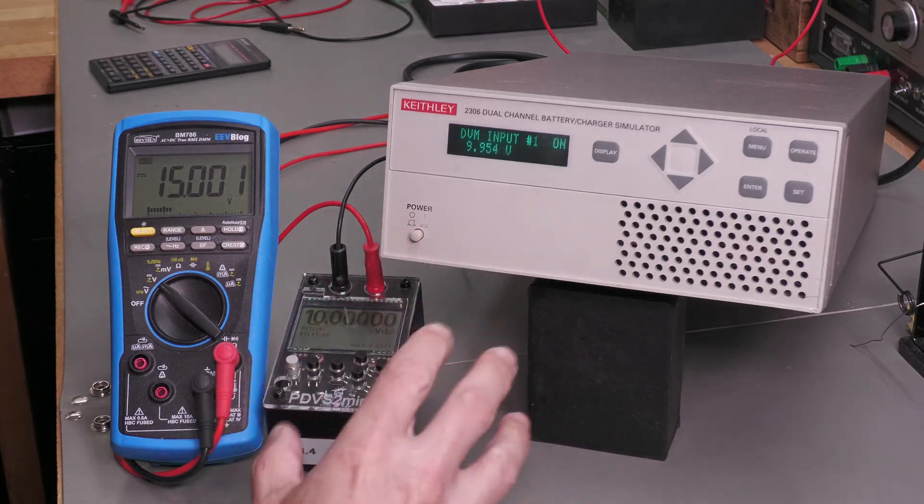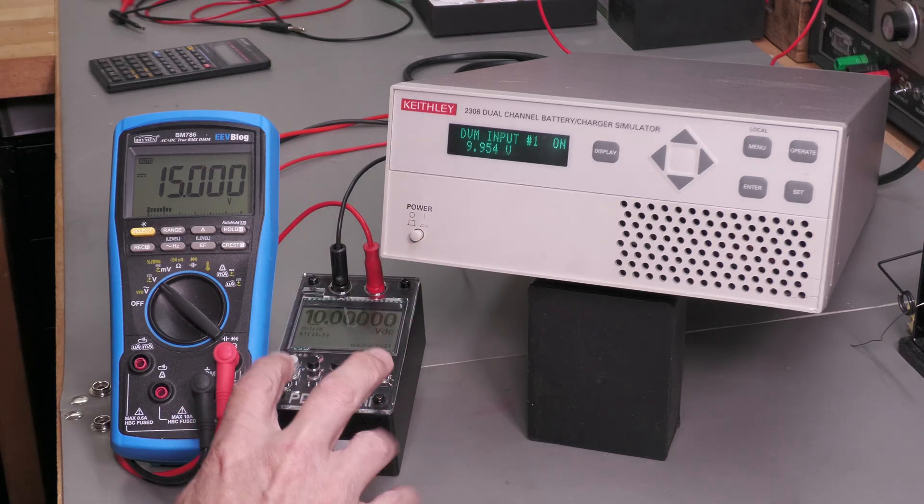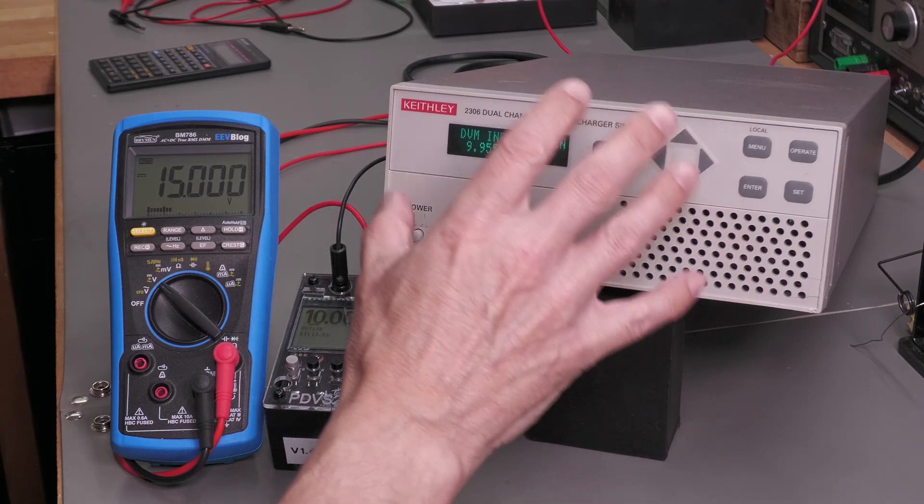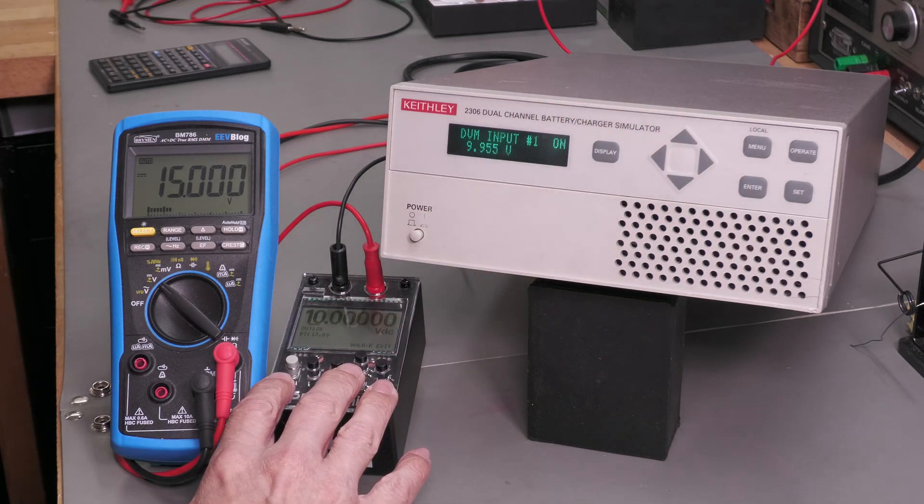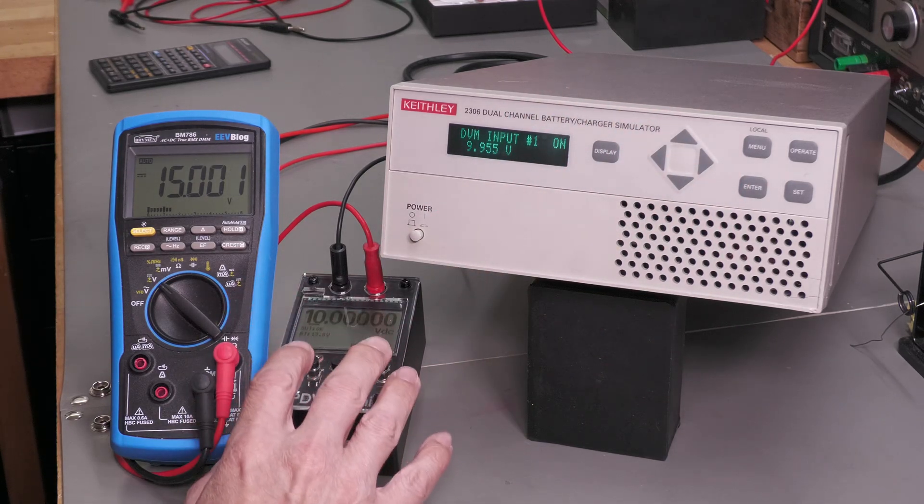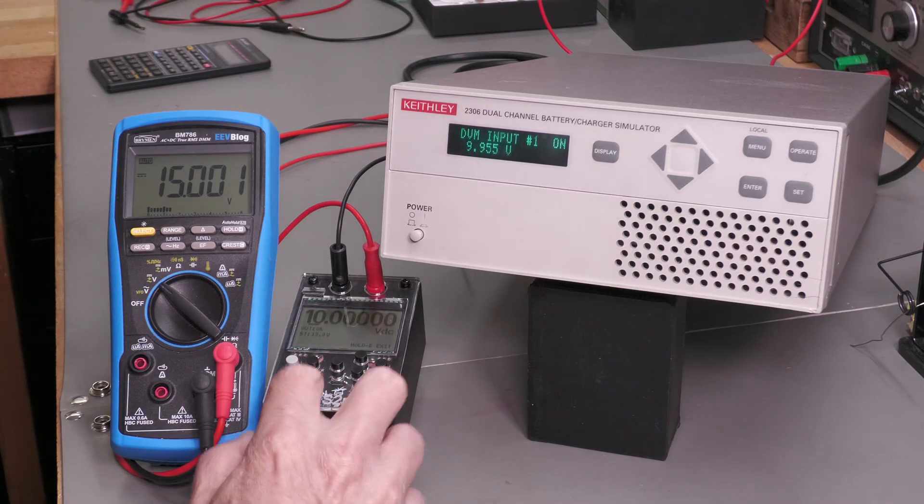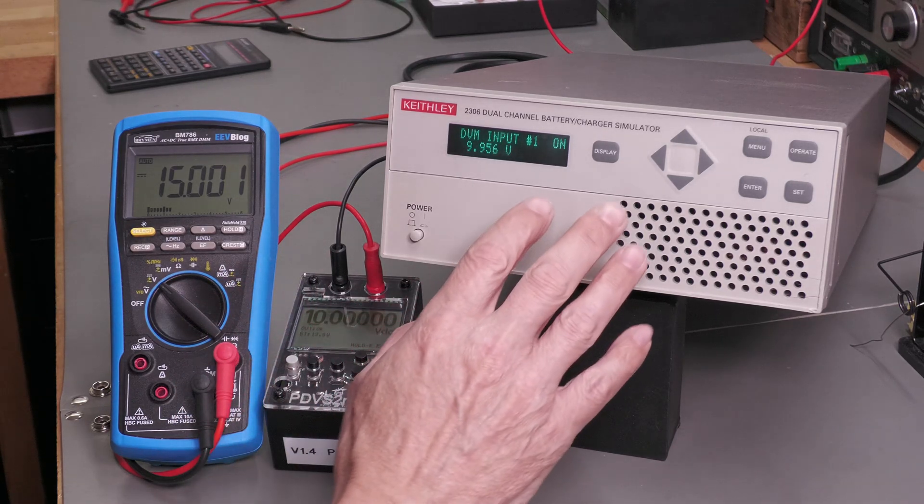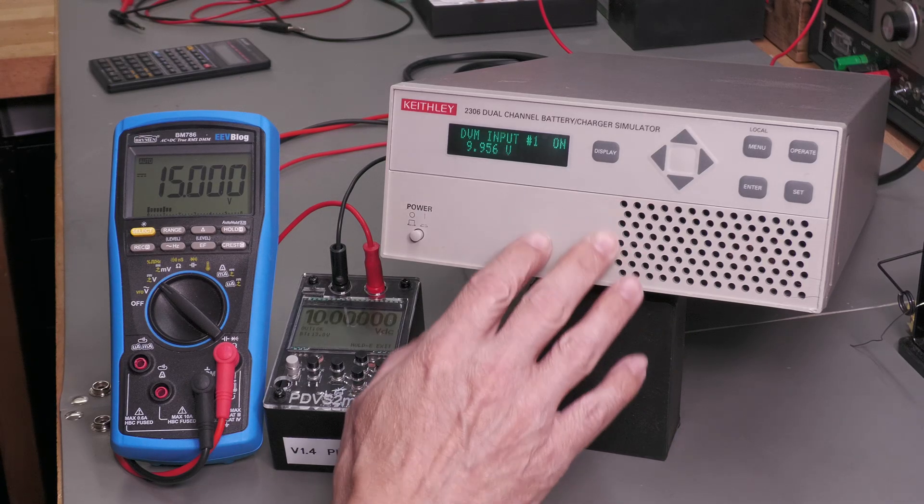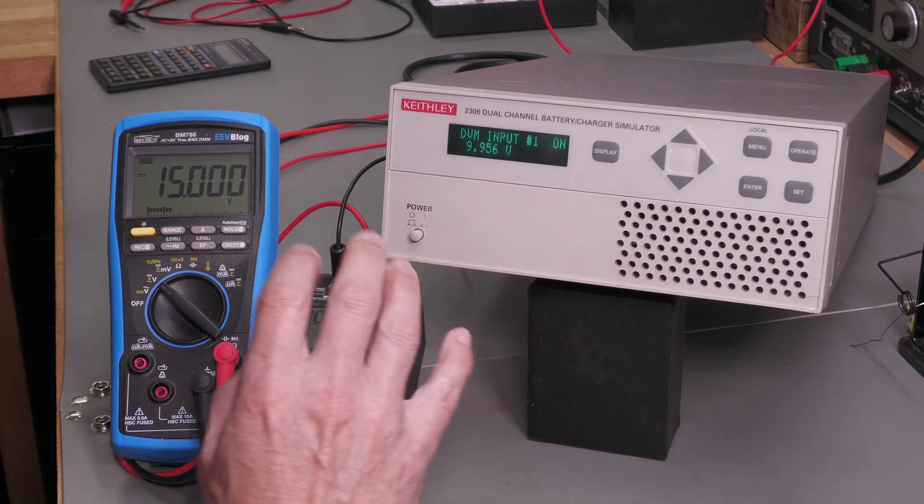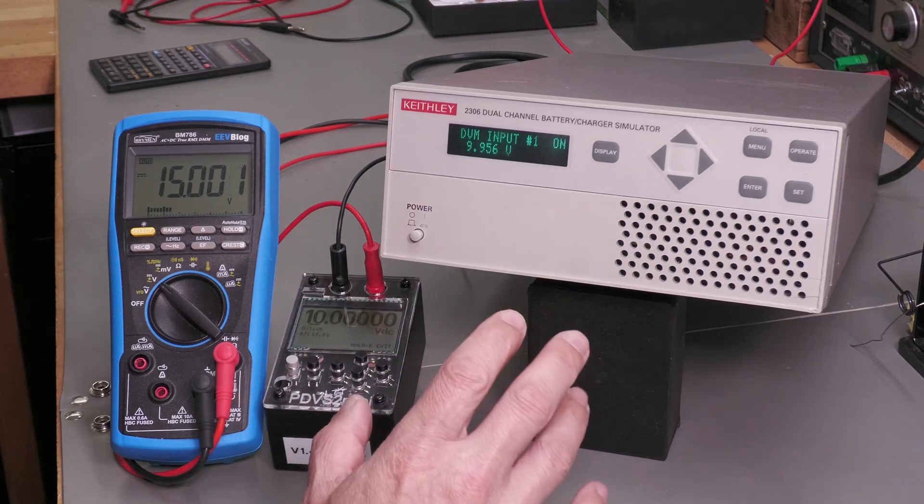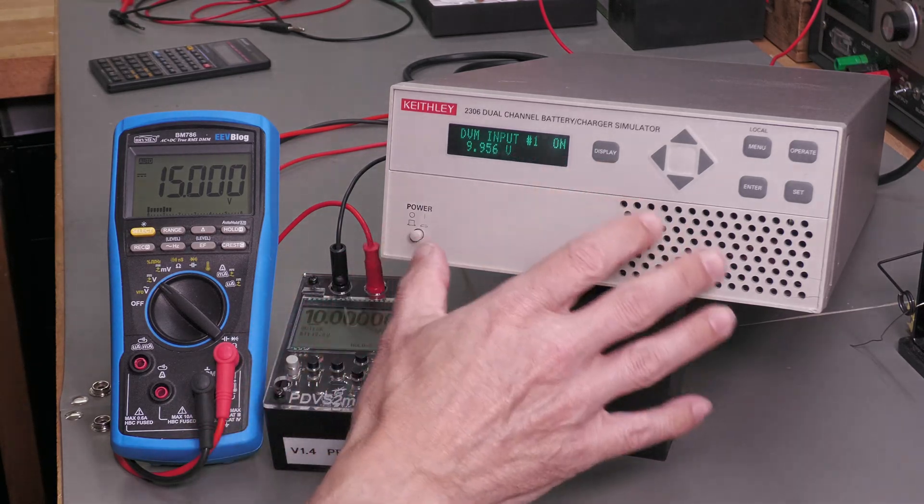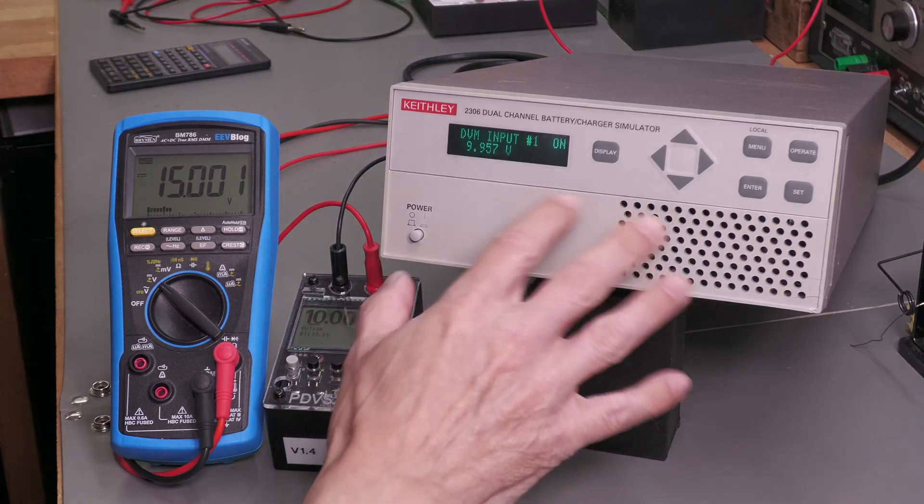However, I was actually hoping to hook up the PDVS2 mini and use this unit to simulate the batteries and charge the PDVS2 mini. However, looks like I can't do that. PDVS2 mini needs a minimum of 18 volts for charging, and this unit can only go up to 15 volts maximum. So sorry, I can't do that. So I'm going to have to try and find some other device I can use to fully test the 2306.